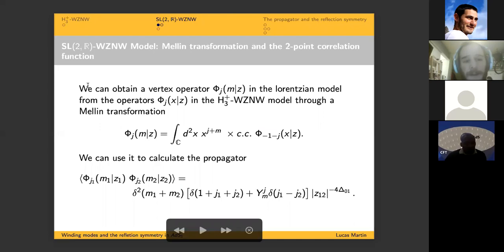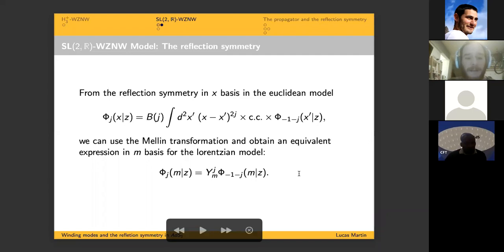That was the Euclidean model and we are going to talk about the Lorentzian model. The Lorentzian model will have operators labeled by an m letter that we have to construct from the operators in the Euclidean model through a transformation called Mellin transformation. We can do the Mellin transformation of the two fields and obtain the propagator having the same dependence of j like the delta 1+j+j and the delta j-j. We can get the reflection symmetry for the new states in the SL(2,R) representation.